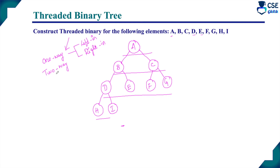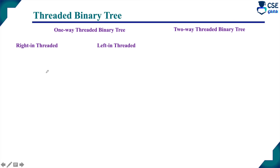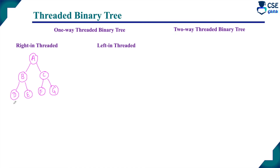Now we will construct the threaded binary tree — both one-way threaded and two-way threaded. There are two types of one-way threaded binary tree: right-in threaded and left-in threaded. In right-in threaded, if a pointer to the right link is null, it should be replaced by the in-order successor. Each node has three fields: left link, node value, and right link.